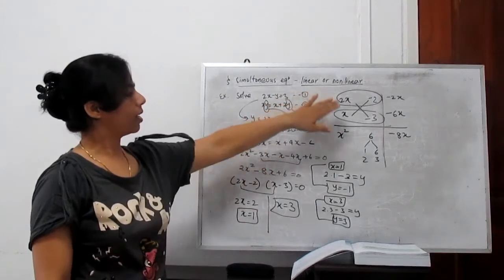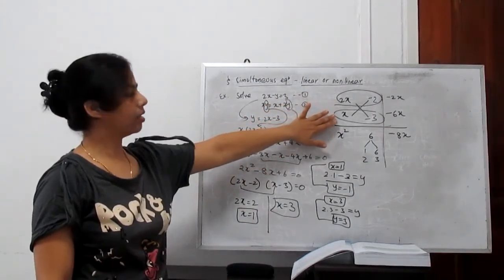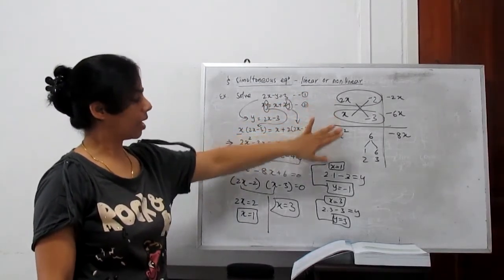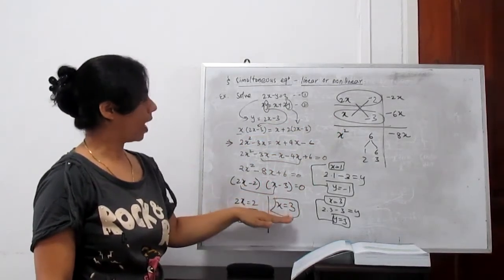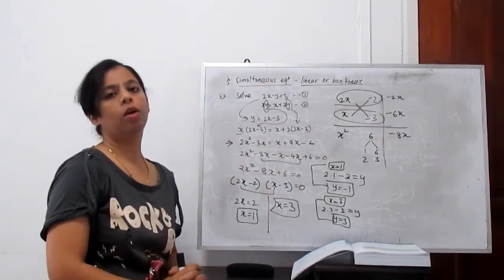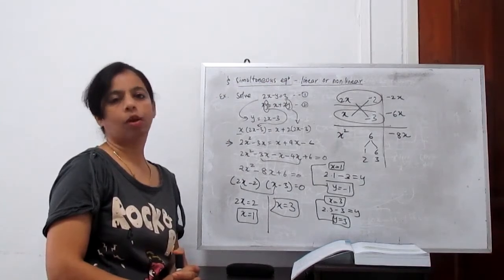With quadratic factorization, you know how to factorize. Use cross method. Factorize it. Find the roots. When roots come, values of x or y, whatever, you can substitute above. Find another values.